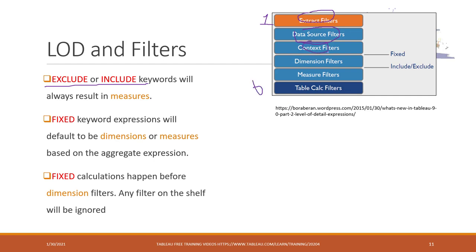You can also apply a context filter. We didn't talk about that one — it's when you create a filter, right-click, and convert it into a context filter. That will be applied to all the sheets. This is where the fixed level of detail calculation will be applied.